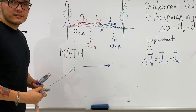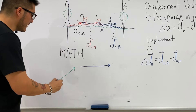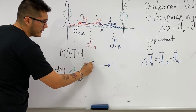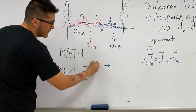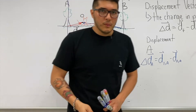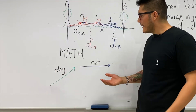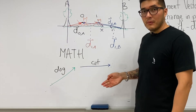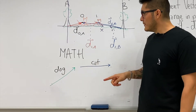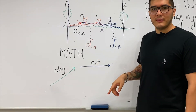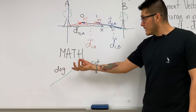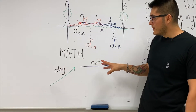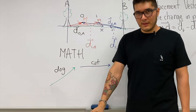I'm going to give these two vectors names — the dog vector and the cat vector. Why choose such random names? Well, what do dogs and cats usually like to do when they're playing together? The dog likes to be chasing after the cat — specifically, chasing after the tail of the cat.